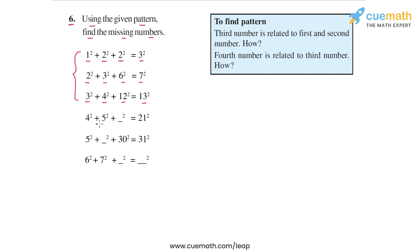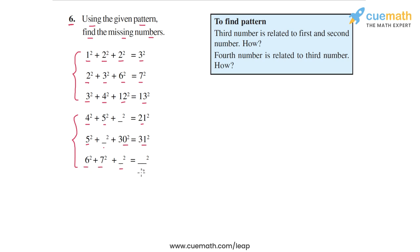Using that pattern, we have to complete the remaining three statements. The remaining statements are: 4² + 5² + ?² = 21², then 5² + ?² + 30² = 31², and then 6² + 7² + ?² = ?². So we have to fill up all of these blanks.